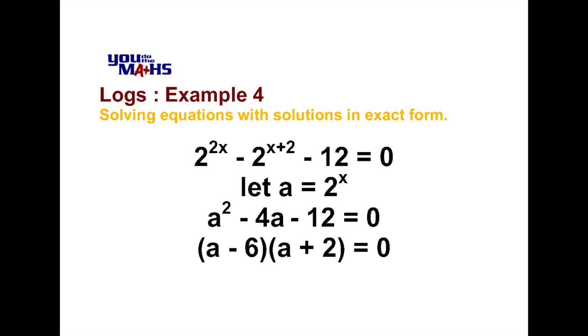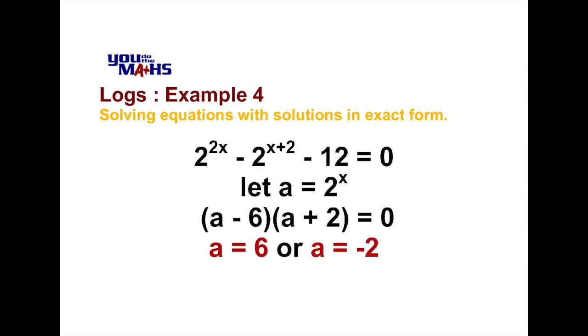Now to solve this equation equal to zero, we have a product of two expressions and one of those brackets must equal zero. So either a minus 6 equals zero which means a equals 6, or a plus 2 equals zero which means a equals negative 2.